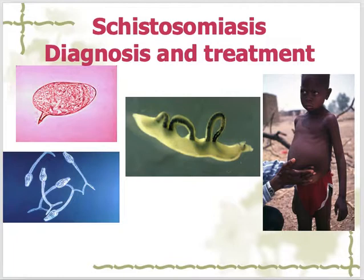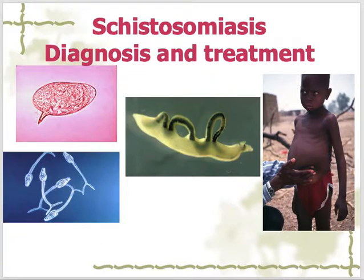Good morning everyone. Today's lecture on schistosomiasis is a part two, a continuation of the previous lecture. This one covers the diagnosis, treatment, and prevention of schistosomiasis. In the previous lecture we discussed the different types — hematobium, japonicum, and mansoni — as well as the life cycle, distribution, and prevalence of this condition.